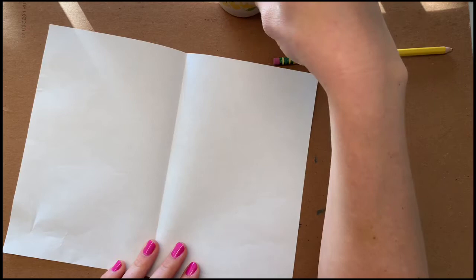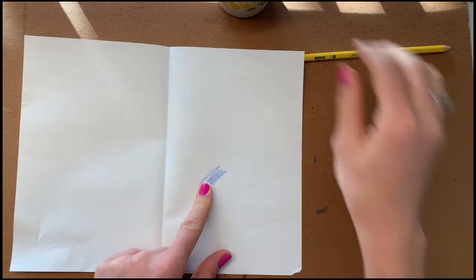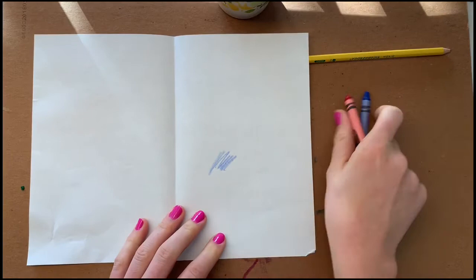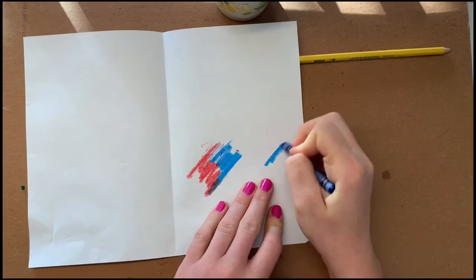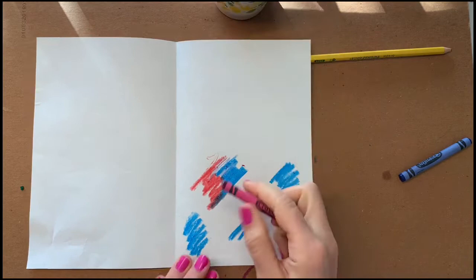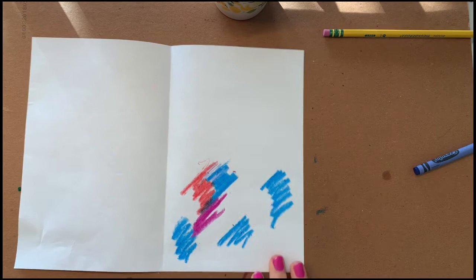So when you are coloring, you can color using any colors you would like. I just want them to be kind of dark. So even that blue is kind of light. Try to find the darker colors in your crayons and just color. So I'm just doing little patches of colors that I like. You can do the same.